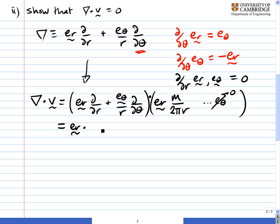and the d by dr can also hop the other side of the vector here simply because d by dr of e_r is equal to 0. e_r does not depend on r.